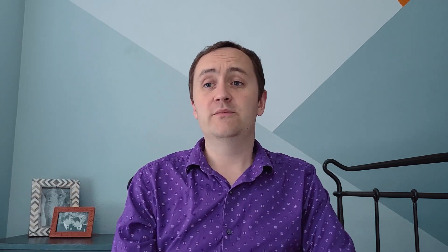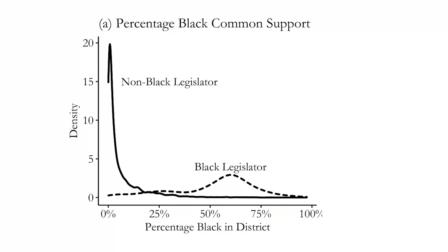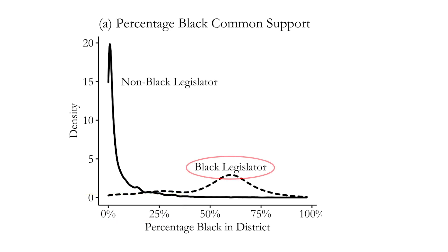So if we want to compare Black legislators to non-Black legislators and close the back door through how many Black people live in the area, we need to look for an area of common support. Maybe there's some common support at the lower percentage range. But if you look at where most Black legislators are — the 50–75% Black range — there are simply not enough non-Black legislators to really make that comparison. There's a failure of common support in that area.